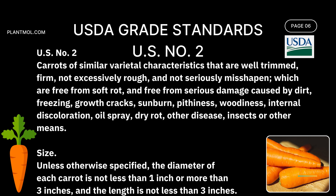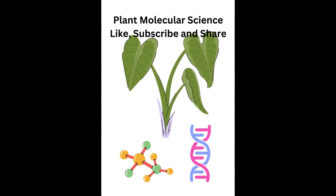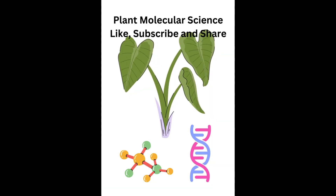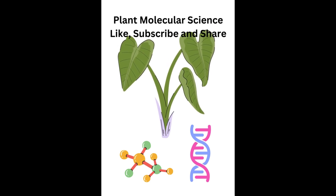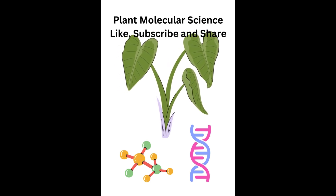Size: unless otherwise specified, the diameter of each U.S. Number Two carrot is not less than one inch or more than three inches, and the length is not less than three inches.